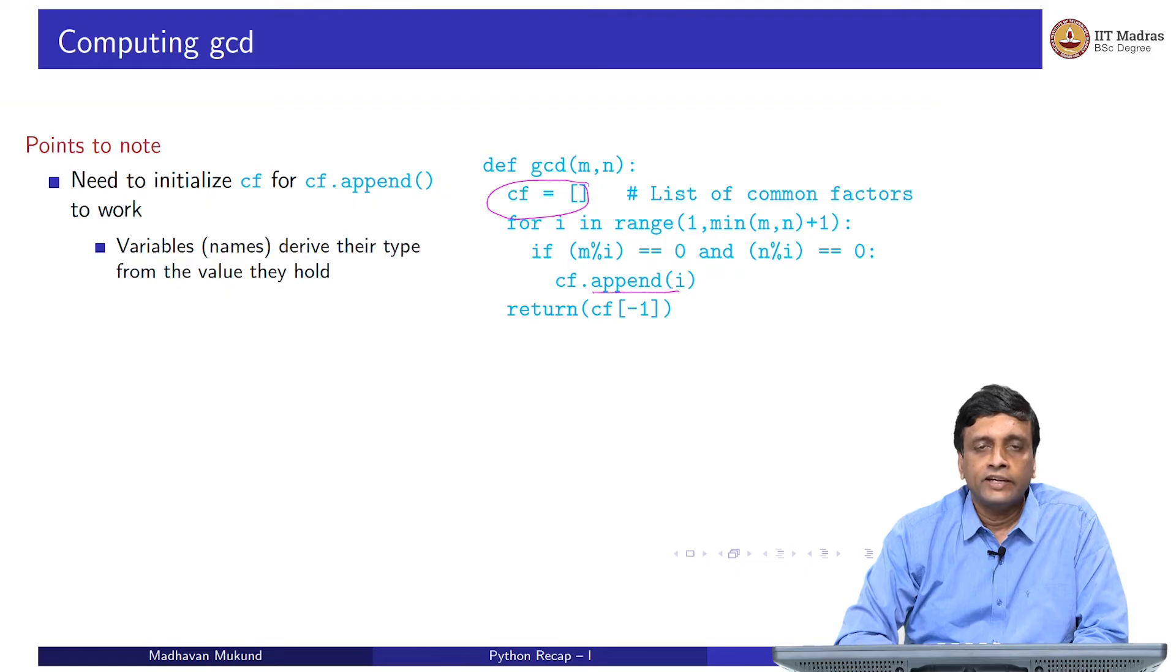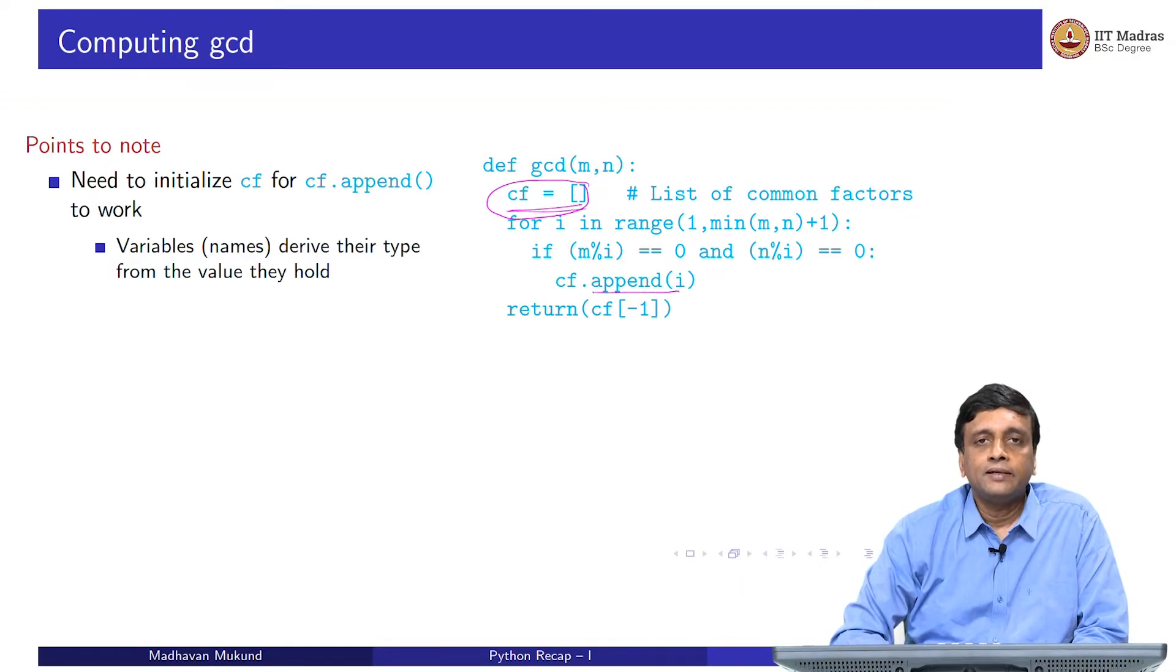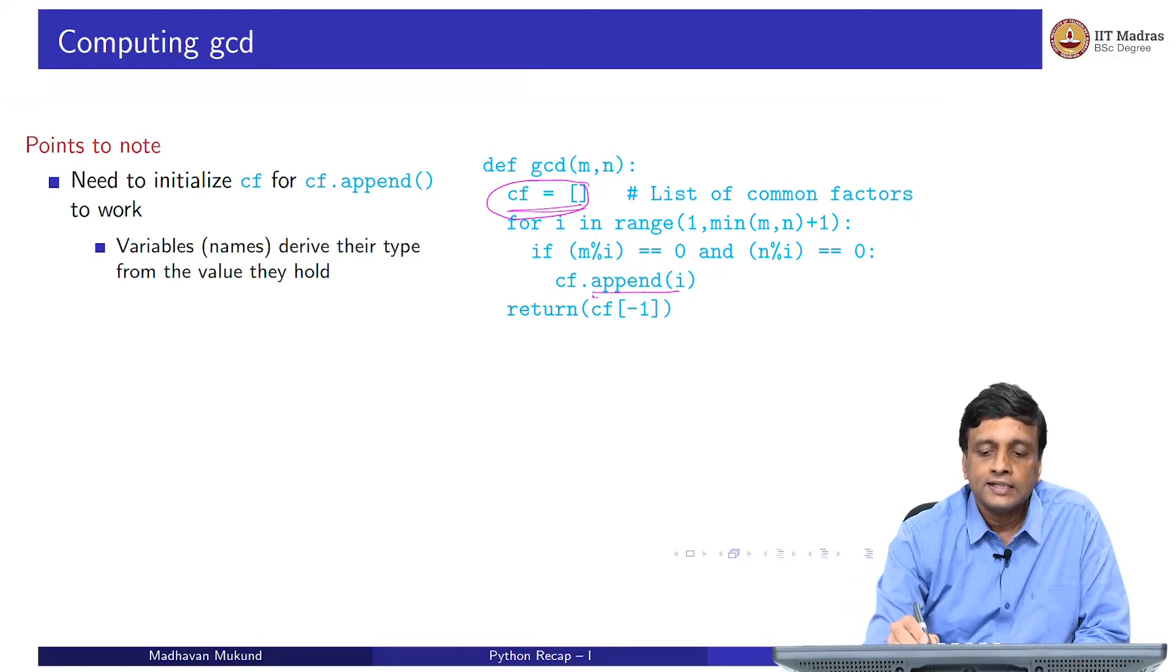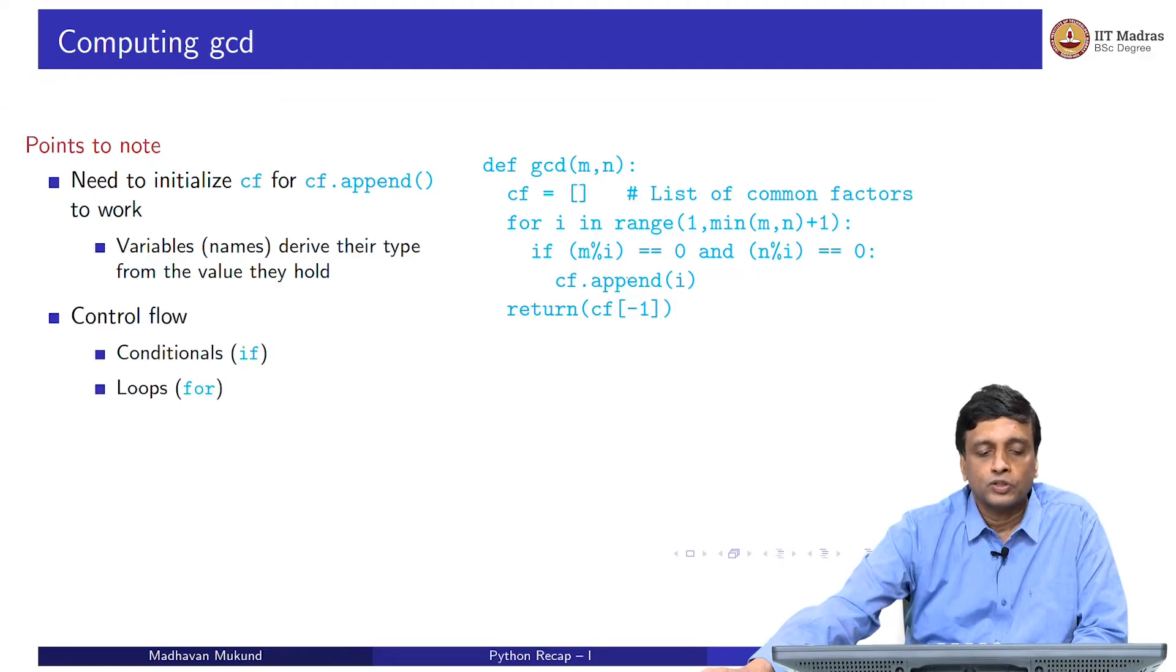A variable which has not been initialized has no type. And if it has no type, then we do not know what operations are legal, for example, is append legal or not is plus legal or not. That is why we have to first announce to Python that we have an empty list so that when we start adding things to the list using append, it is legal. This is the first thing to note about this code.